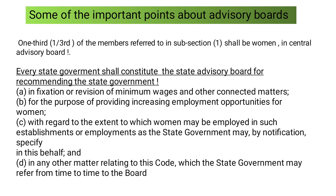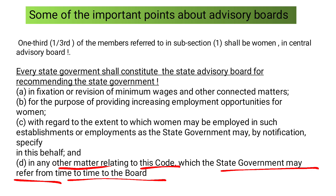The third provision is with regard to the extent to which women may be employed in such establishments or employments as the State Government may by notification specify. The State Advisory Board will recommend to the State Government stating that in particular departments — such as Administrative or Service Department — women can be employed, and the State Government will issue a notification accordingly. The fourth work is any other matter relating to this code which the State Government may refer from time to time to the board.